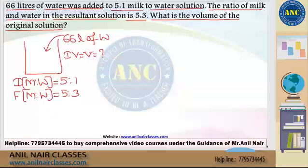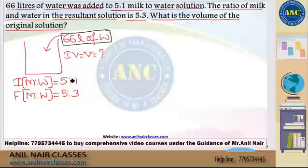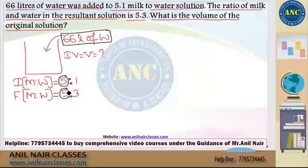This is exactly similar to the previous question — there is no difference. But in this question, I am adding water inside the vessel. If I add water inside the vessel, the milk parameter will not get affected; only water will get affected. Because milk is not affected, however much milk is present initially, the same quantity of milk should also be present finally. So according to ratio, initially milk is 5 and finally milk is also 5 — they both become the same, which is exactly what the concept says.